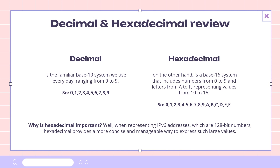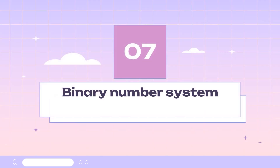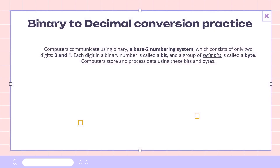To understand IP addresses better, we need to talk about the binary number system. Computers communicate using binary, a base 2 numbering system, which consists of only two digits: 0 and 1. Each digit in a binary number is called a bit, and a group of 8 bits is called a byte. Computers store and process data using these bits and bytes.